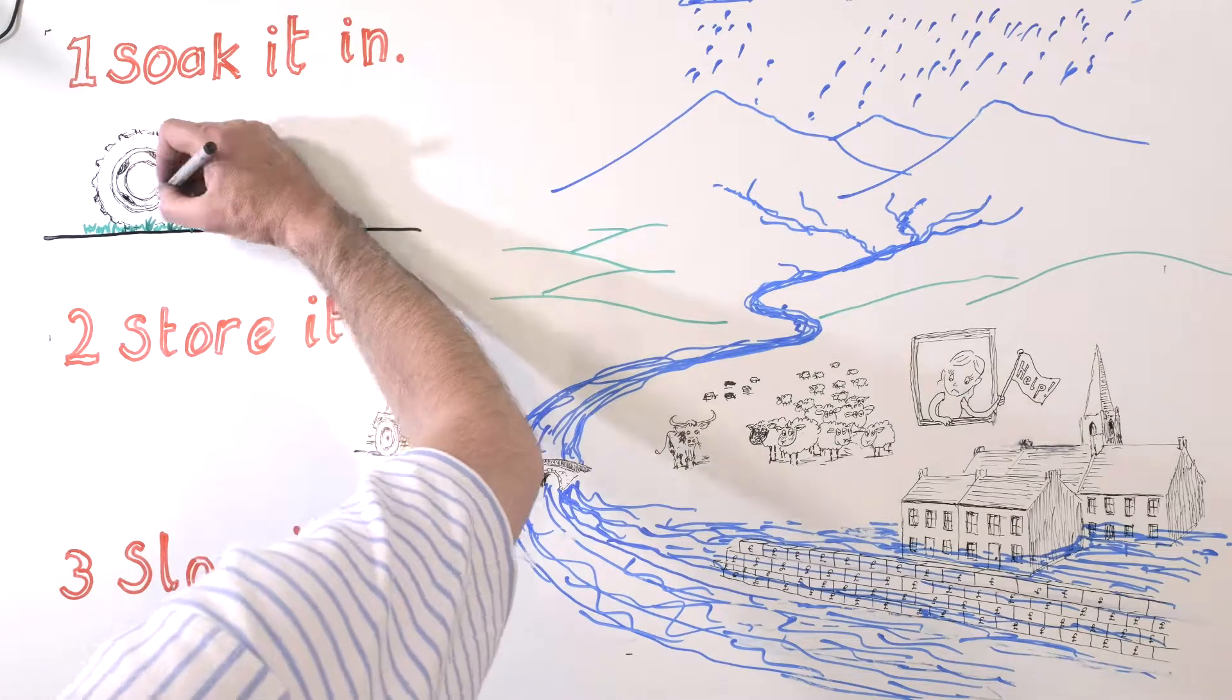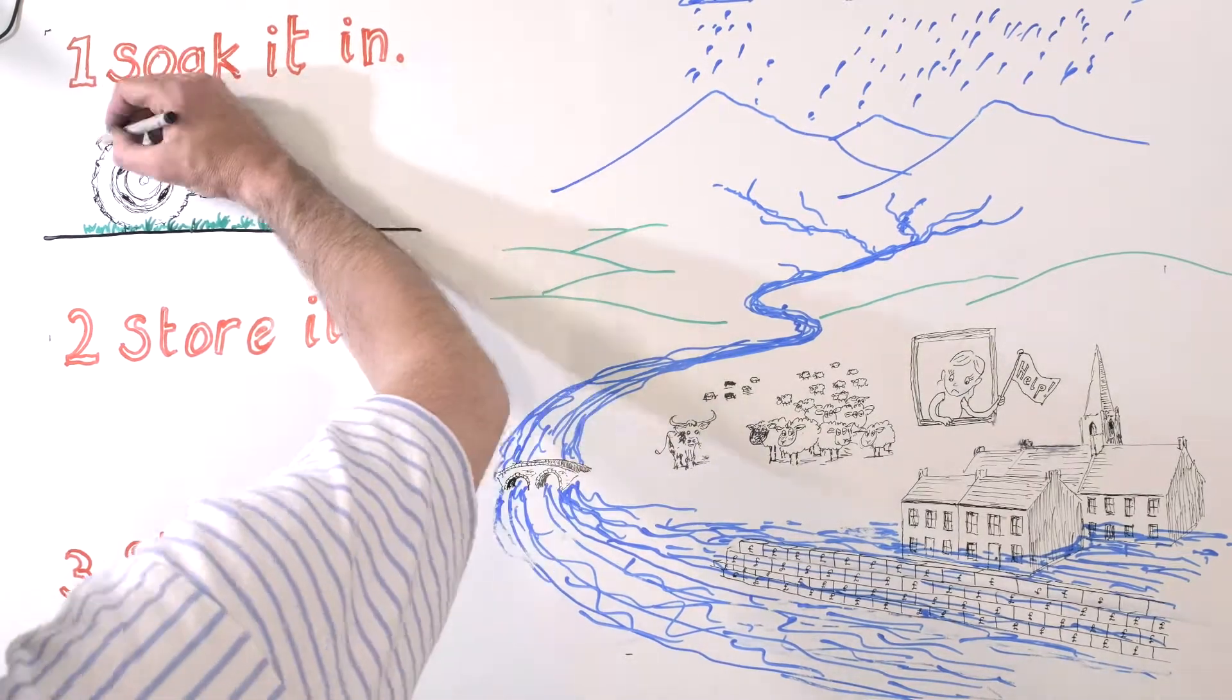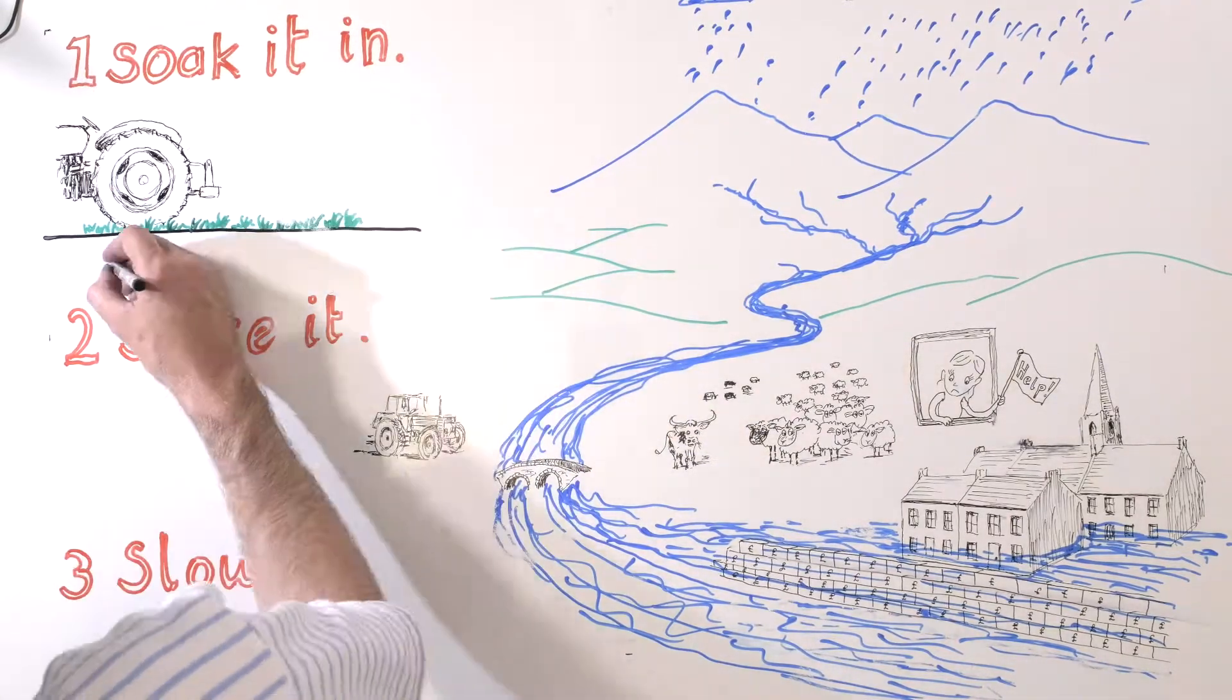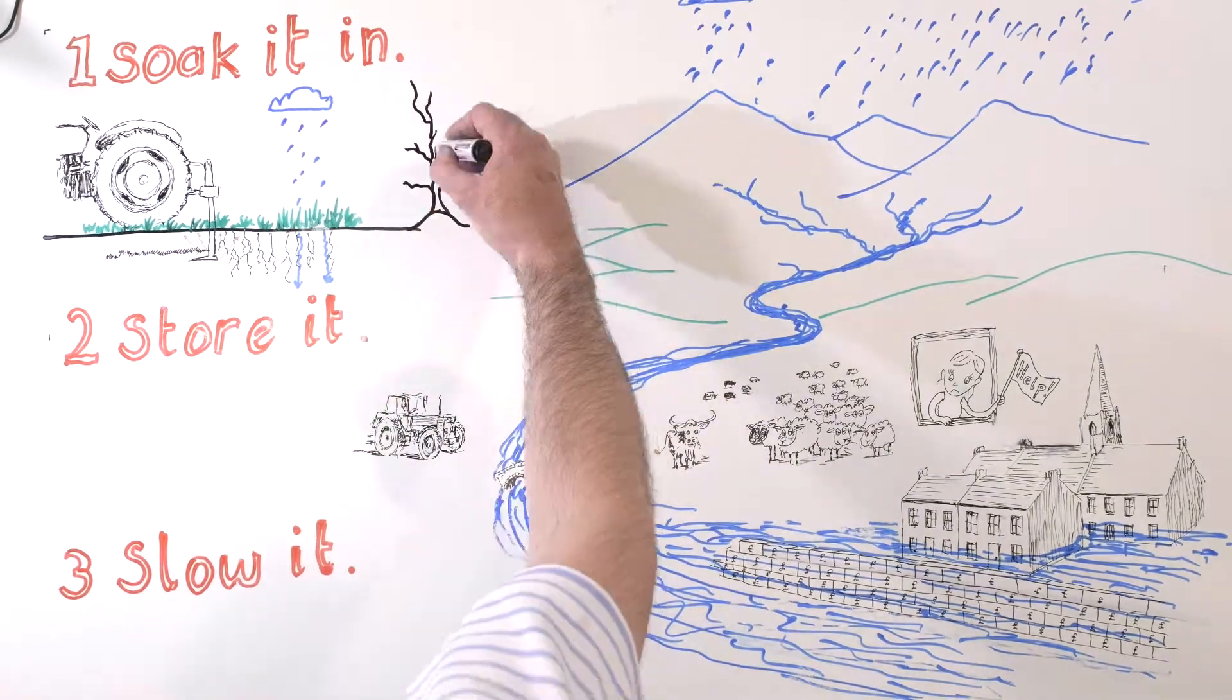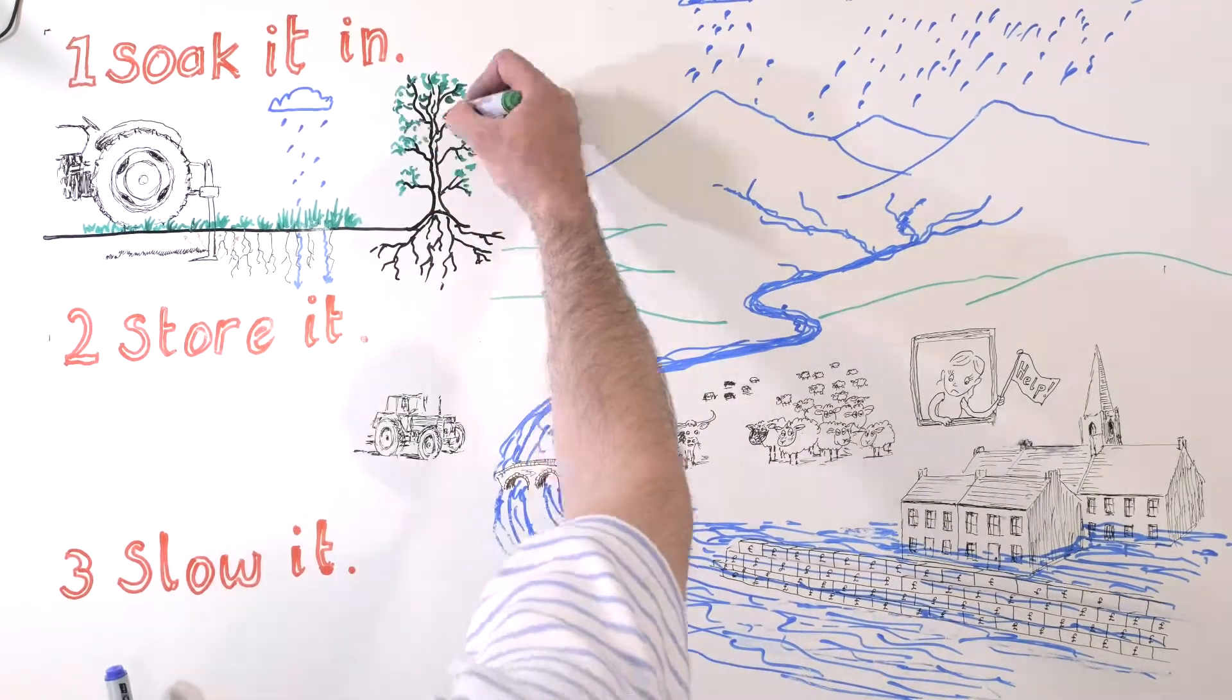The more water that infiltrates into the soil, the less rapid runoff that goes to the rivers. We can increase infiltration with soil management, such as aeration, or by the planting of woodlands.